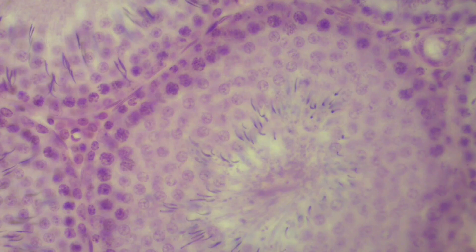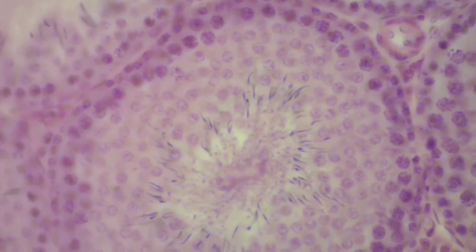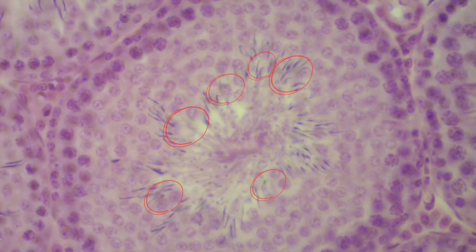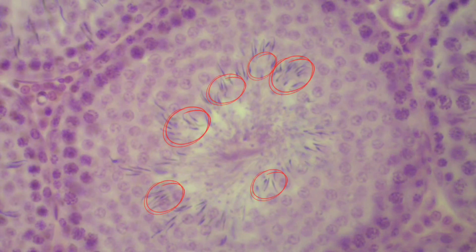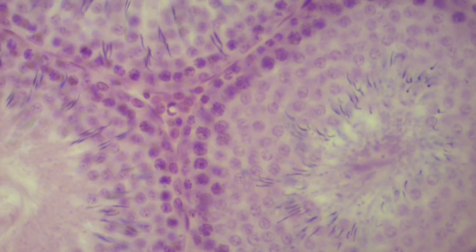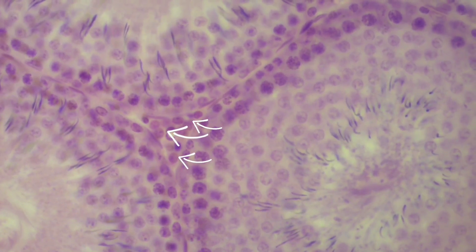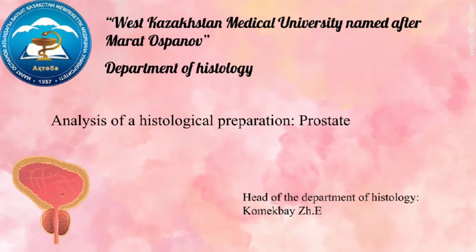For example, at the periphery of the tubules are located spermatogonia. The next cells are spermatocytes and spermatids. Between the seminiferous tubules are visible interstitial cells, or Leydig cells, with a large nucleus and eosinophilic cytoplasm.